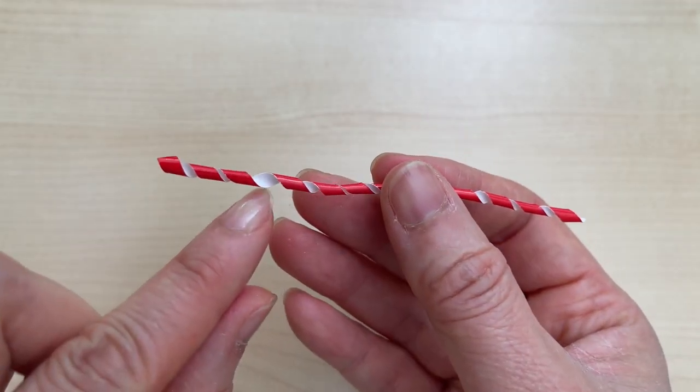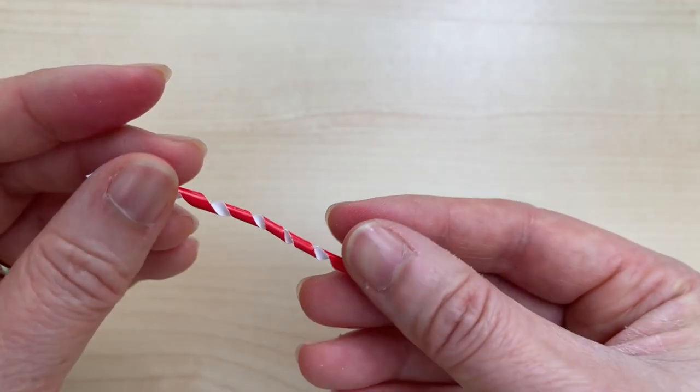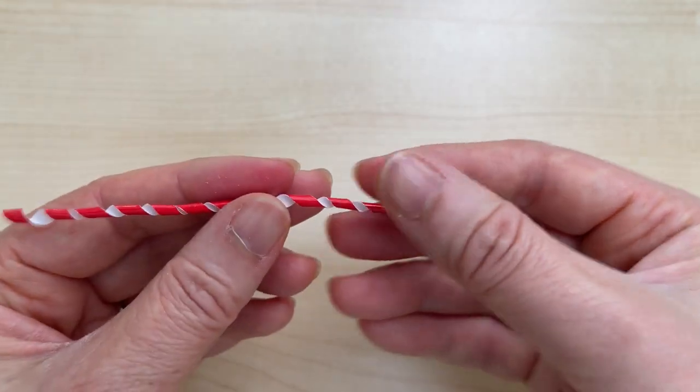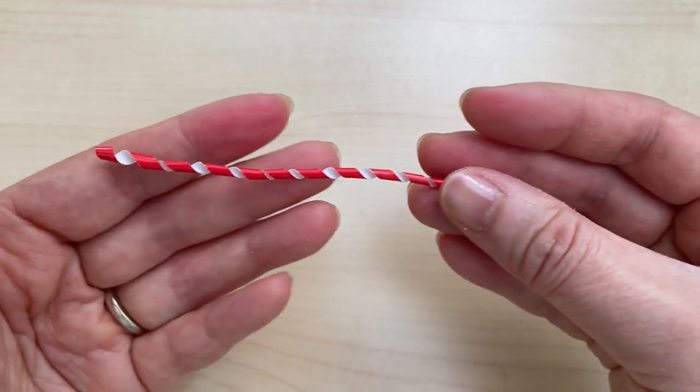If you have problems making the spirals even like you can see here, then what I do is coil the spiral tighter and then I loosen the coil up and just like magic the spirals are more even.